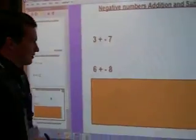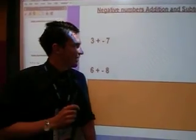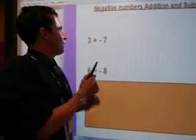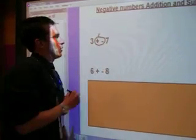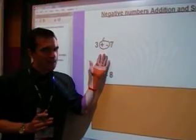Now we're going to look at the trickier bits. 3 plus minus 7. Now, when we've got two signs that are the same, or different, there are certain rules. But they have to be together like this.